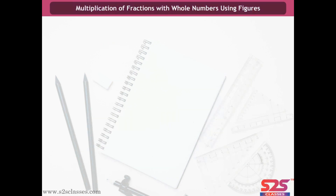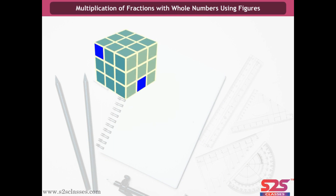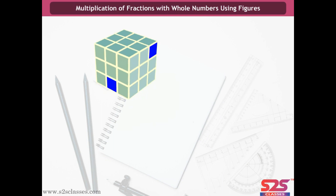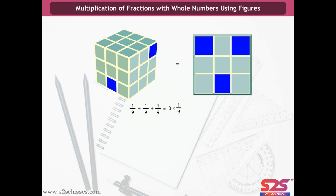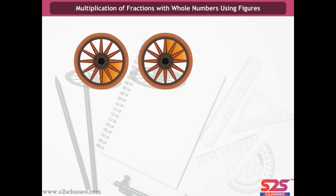Multiplication of fractions with whole numbers using figures. Each shaded part is 1/9 of a rectangle. Three shaded parts together represent 1/9 + 1/9 + 1/9 = 3 × 1/9 = 3/9. Combining two shaded parts represents 3/12 of a wheel. The figure represents 3/12 + 3/12 = 6/12, or 2 × 3/12 = 6/12.